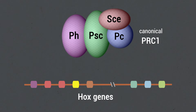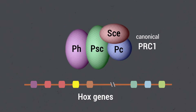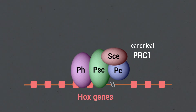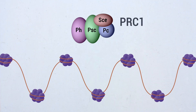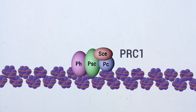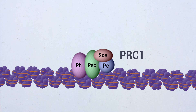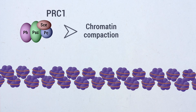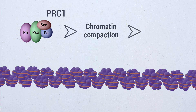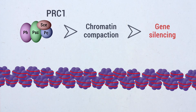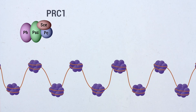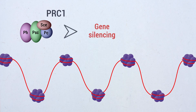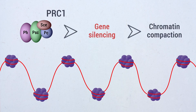The mechanism by which canonical PRC1 mediates gene silencing is not understood. It has been shown that PRC1 is involved in chromatin compaction in vitro and in vivo, but it is unknown whether PRC1-dependent transcriptional silencing is a consequence of its role on higher-order chromatin folding, or whether higher-order chromatin compaction may instead be a consequence of silencing.